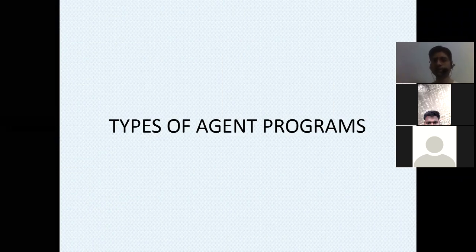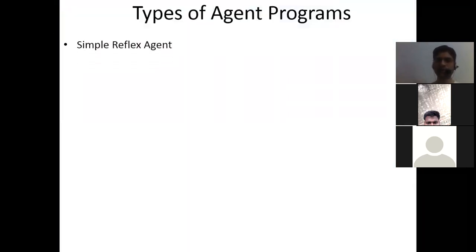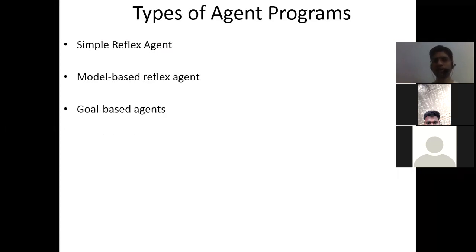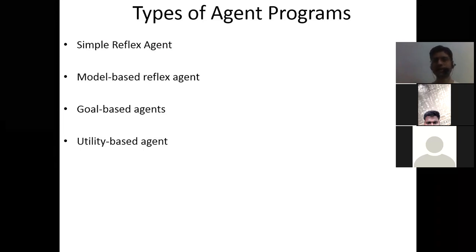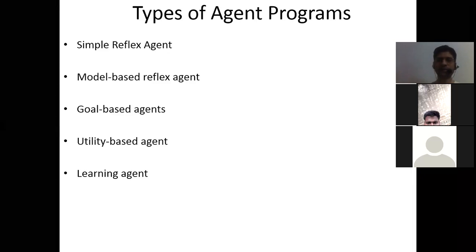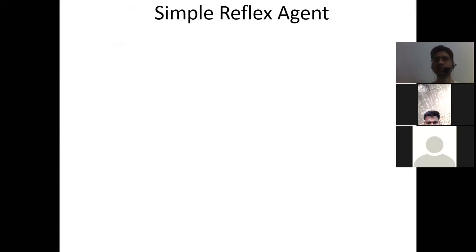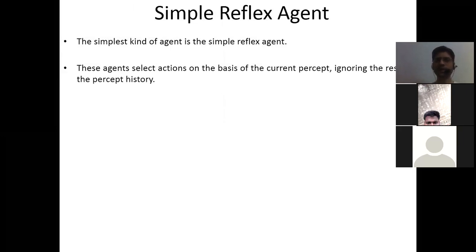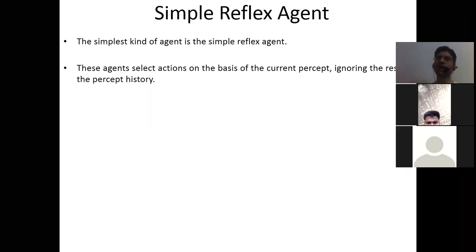There are different types of agent programs. The first is the simple reflex agent — the simplest category, which takes decisions based on input at any given point in time. Then we have the model-based reflex agent, goal-based agent, utility-based agent, and learning agent. The simple reflex agent is the simplest kind because it selects actions based on the current percept only and ignores the rest of the percept history.